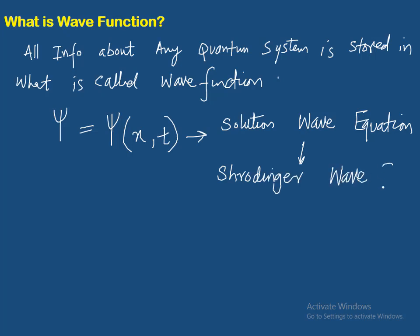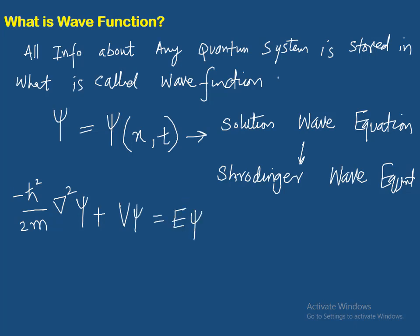Schrödinger wave equation. Schrödinger equation ka solution wave function hai. To Schrödinger equation ki khud ki form kya hai? Let us write: minus H-bar squared divided by two times the mass of the particle, times the Laplacian operator del-squared, times wave function psi, plus potential energy V times psi, is equal to E times psi — E for energy.